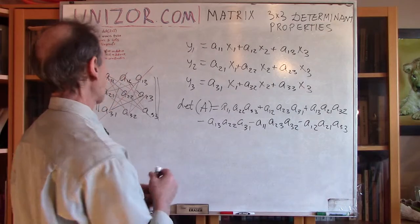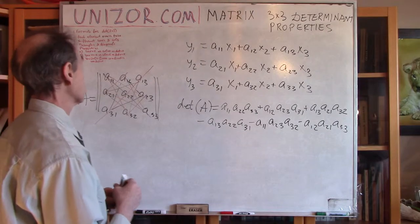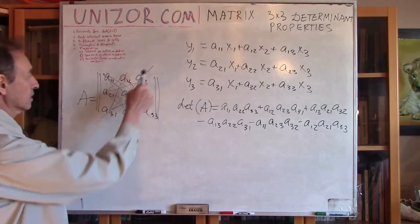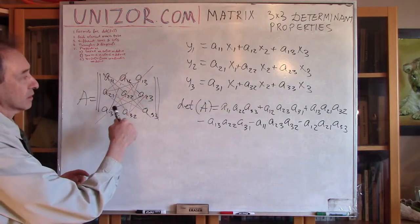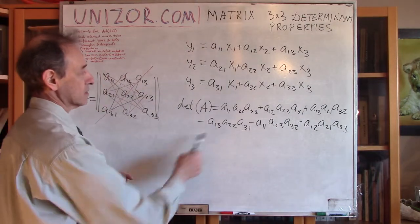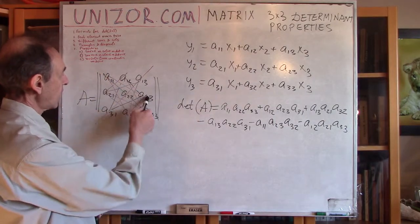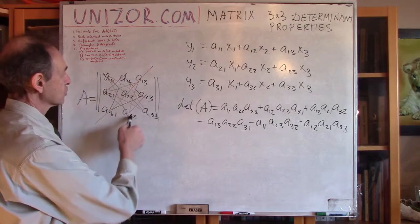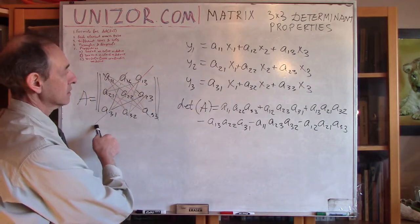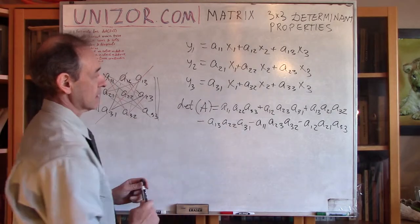The magic doesn't stop there. There is another interesting property. There is a geometric memorization technique which you can use to remember this formula. It's really very easy: the main diagonal and two triangles with a short side parallel to the main diagonal are positive; the alternate diagonal and two triangles with a short side parallel to it carry a negative sign.